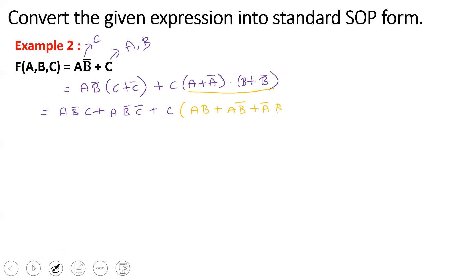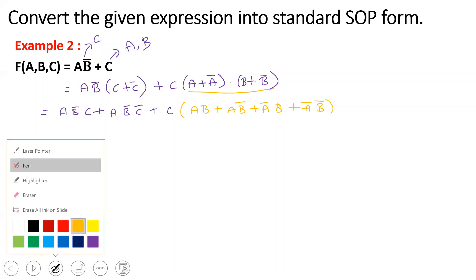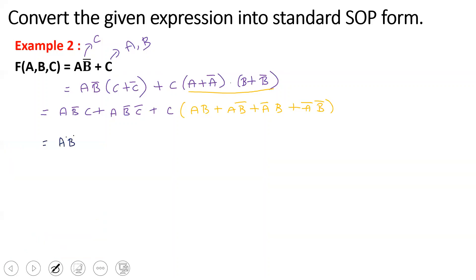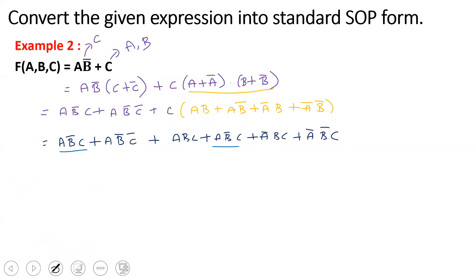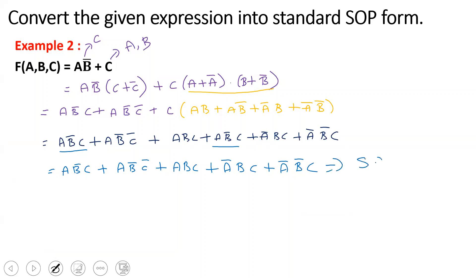Continuing: C·(A + Ā)·(B + B̄) expands to give ABC + AB̄C + ĀBC + ĀB̄C. Combining with the first term and neglecting repeated terms — AB̄C repeats and is neglected. The final result is: AB̄C + AB̄C̄ + ABC + ĀBC + ĀB̄C. So finally, this is the standard SOP form.